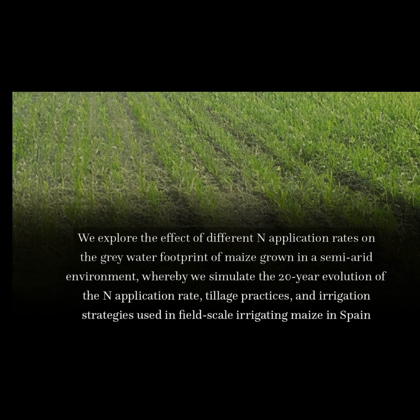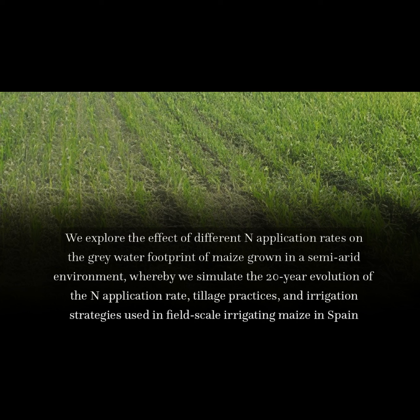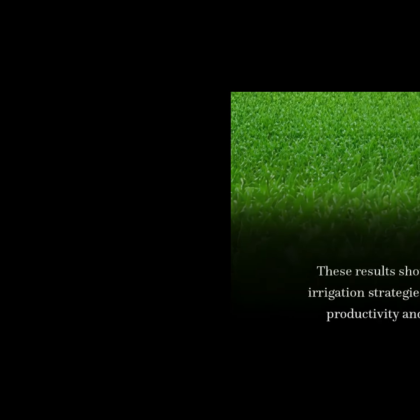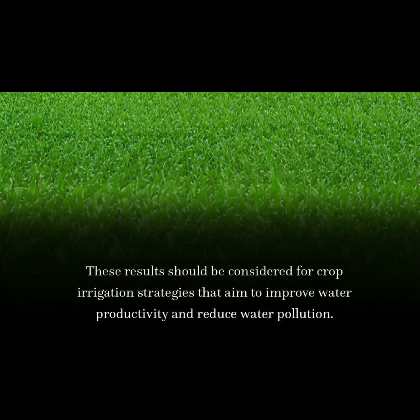We explore the effect of different N-application rates on the gray water footprint of maize grown in a semi-arid environment, whereby we simulate the 20-year evolution of the N-application rate, tillage practices, and irrigation strategies used in field-scale irrigated maize in Spain. We show that a high N-application rate can significantly reduce the gray water footprint, but this also comes with a great reduction in crop yield. These results should be considered for crop irrigation strategies that aim to improve water productivity and reduce water pollution.